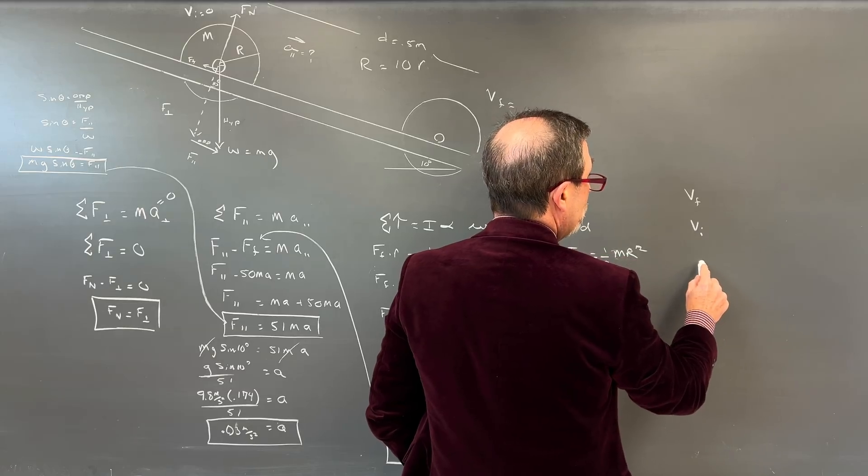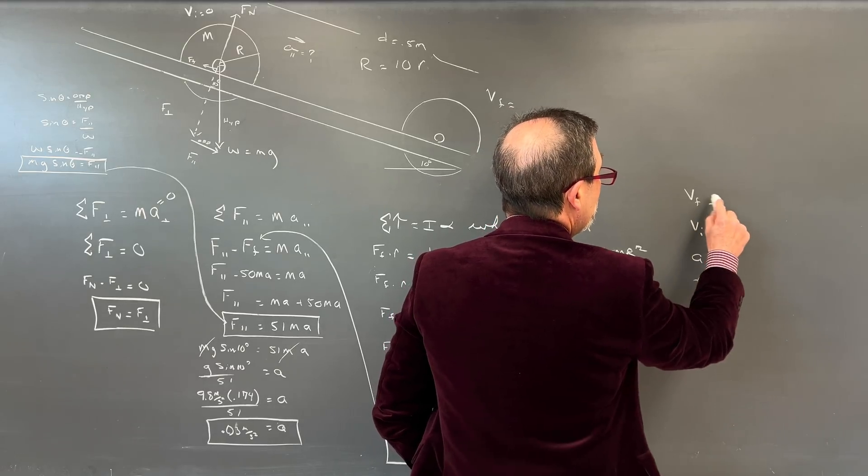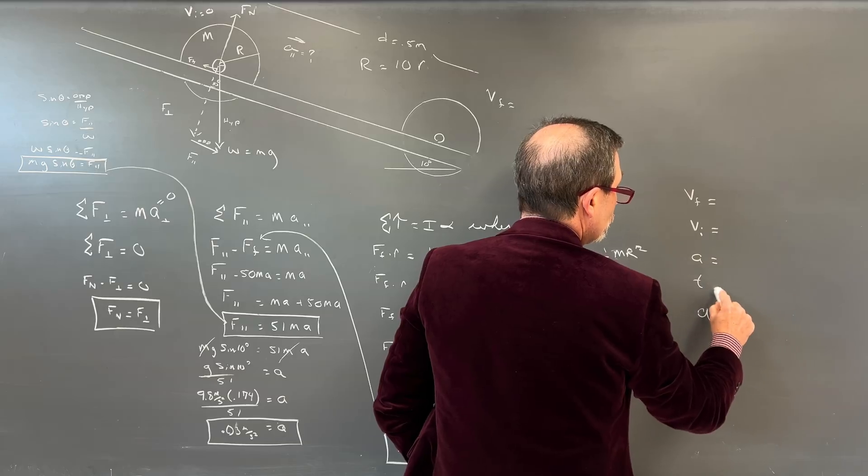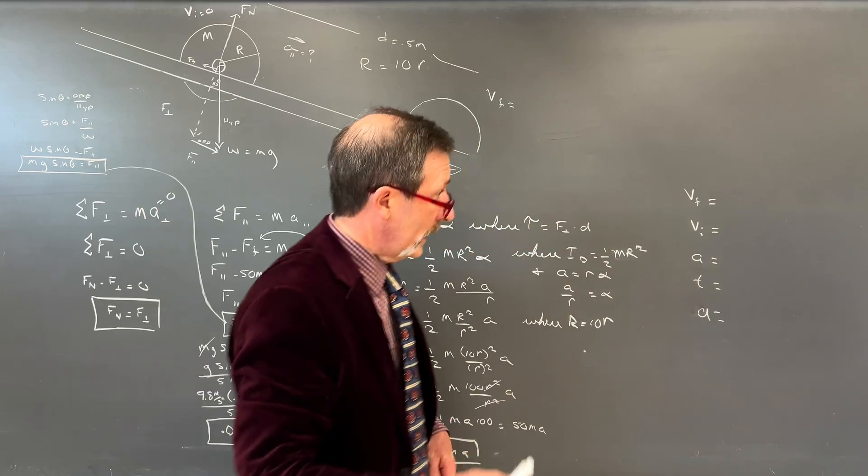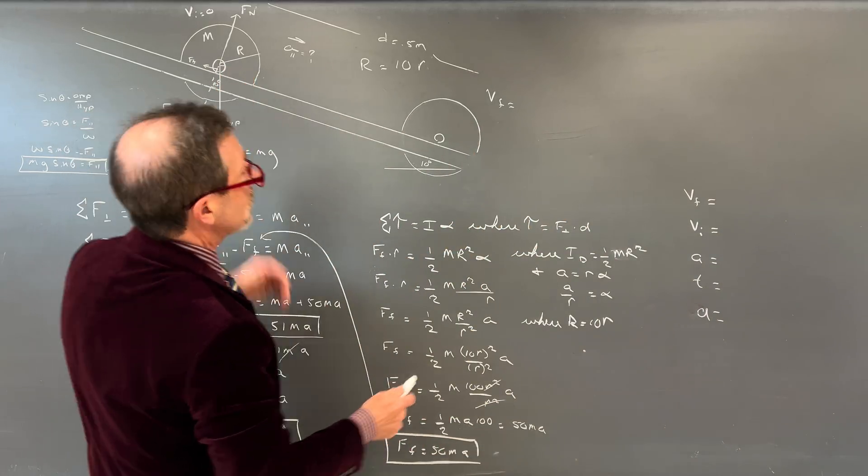Now, let's assume that the meter sticks were crossing at about the 50 mark. So we'll say that the distance that it traveled is 0.5 meters, or half a meter.